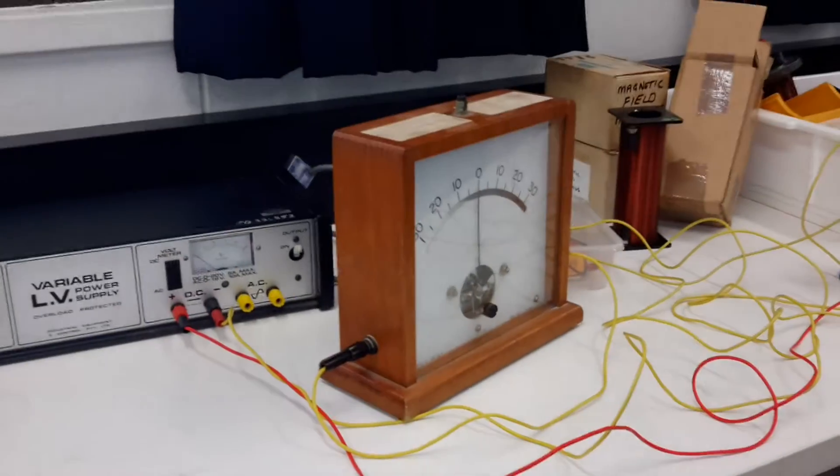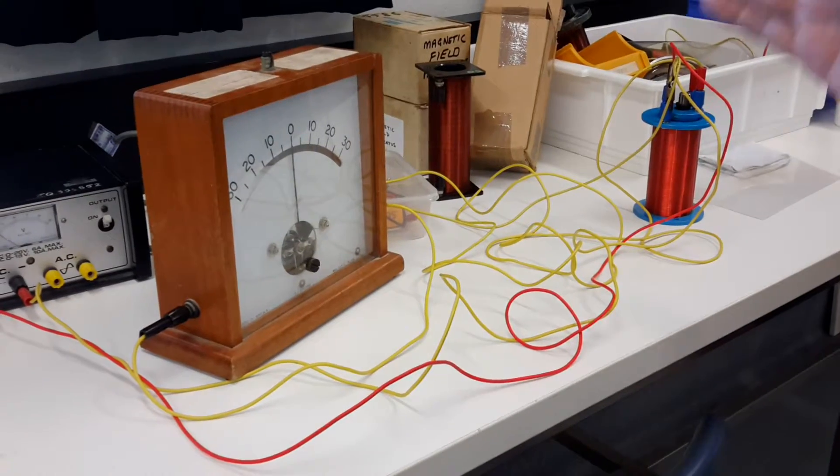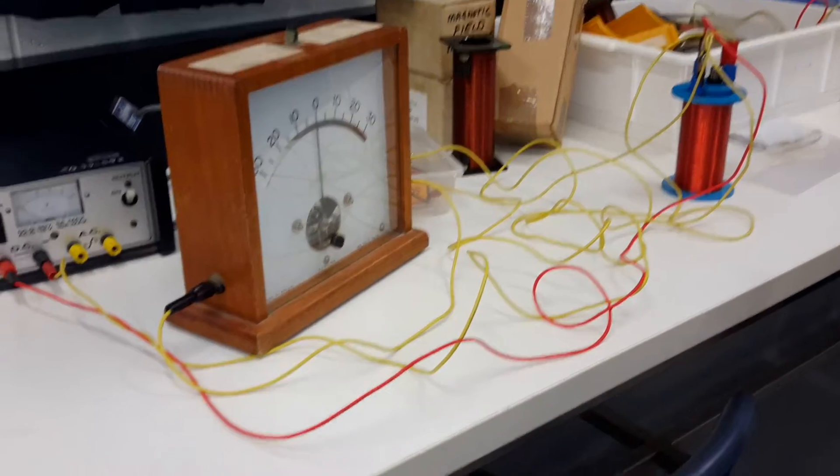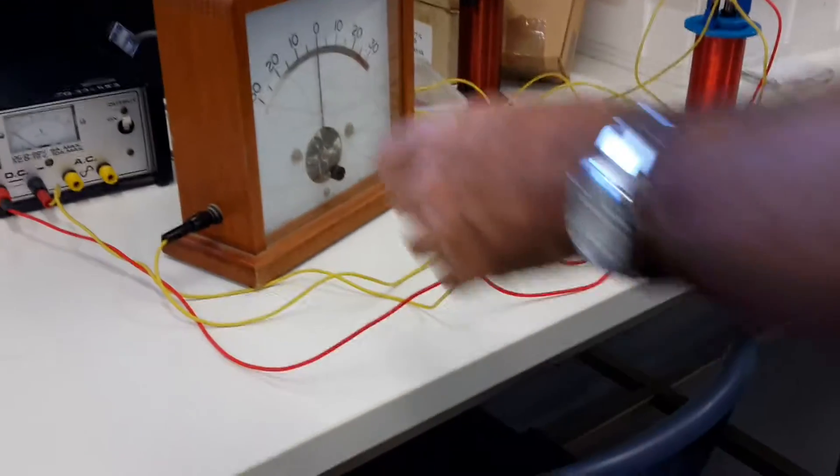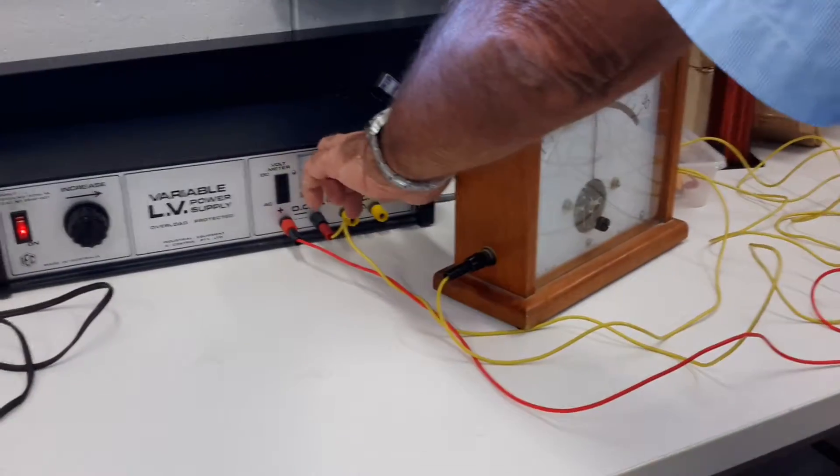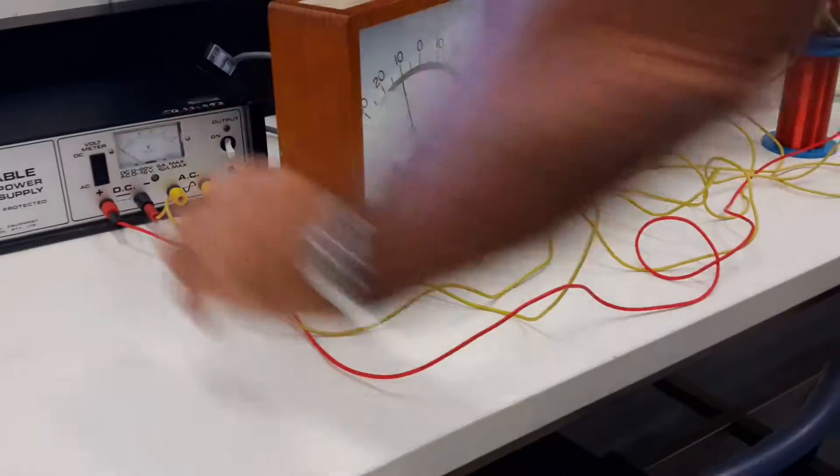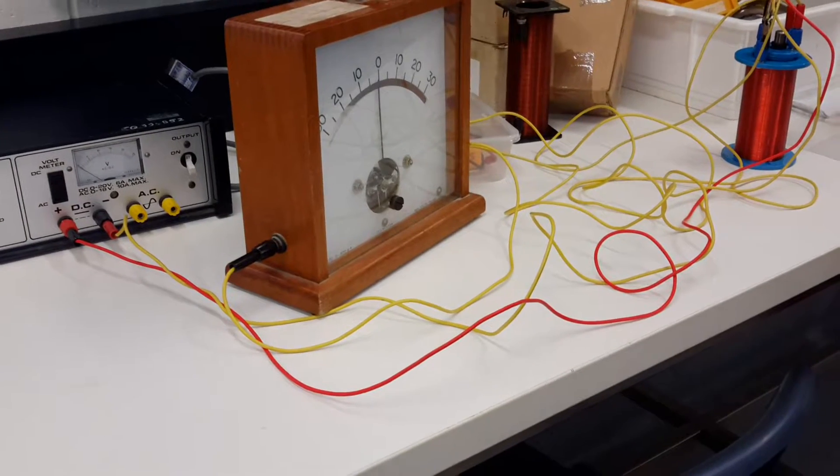Once again, electromagnetic induction. At the moment, no current is flowing in the secondary coil. However, when we switch the current off in the primary coil and the field collapses, you have an induced EMF once again.